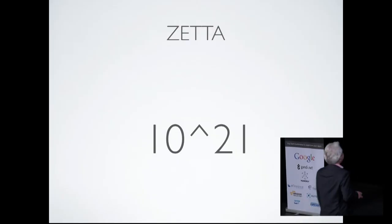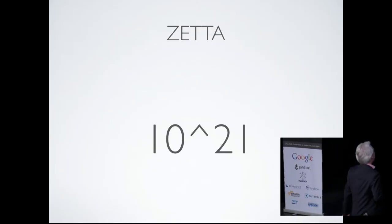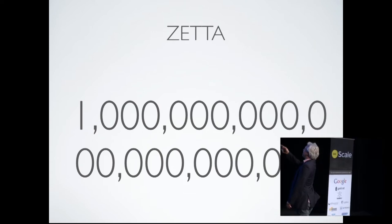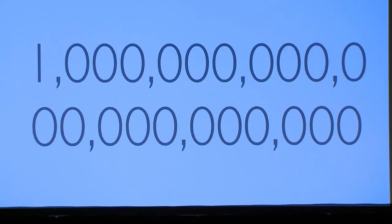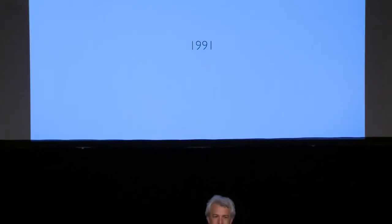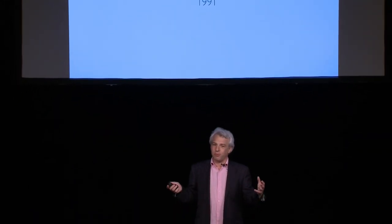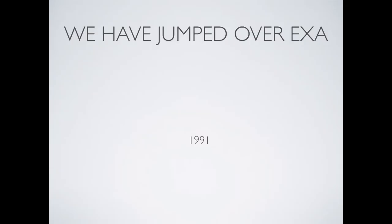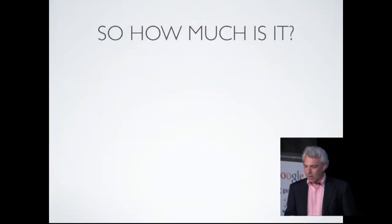This is zeta: 10 to the power of 21. These are the numbers, these are the zeros that represent it. And it's a very recent thing — the term itself is from 1991; we didn't need the term to have an idea of it before that. Same year: exa, but exa is small, so...